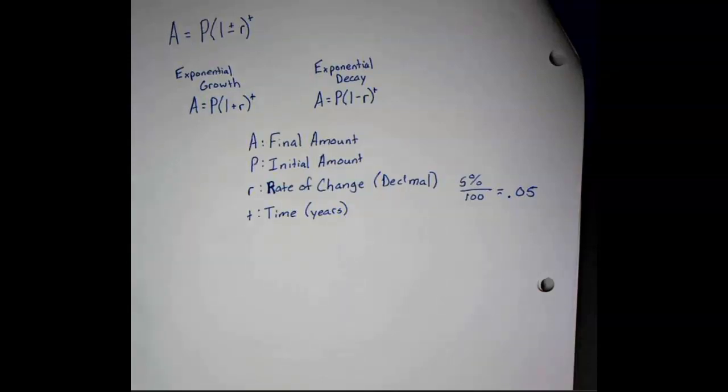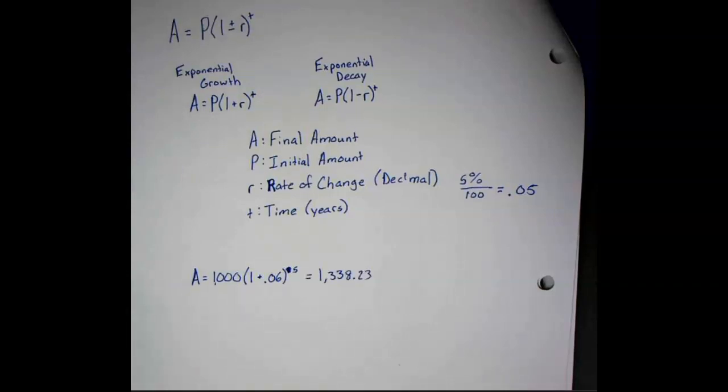If we were given an exponential growth problem like this, we would be able to plug this into the calculator exactly like this and you'd be able to find your answer. In this case, the answer is 1,338.23. Now that was if we were solving for A.